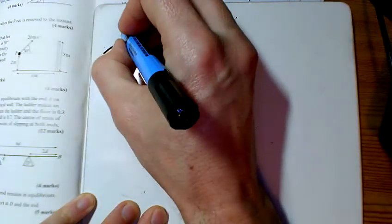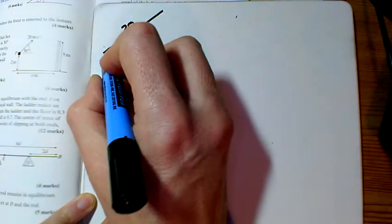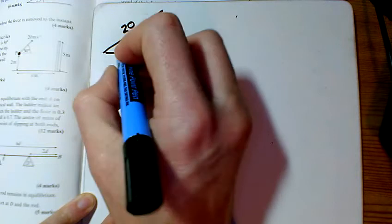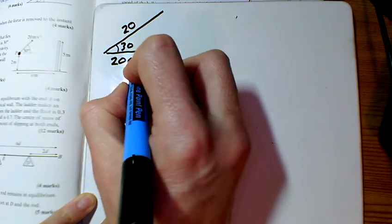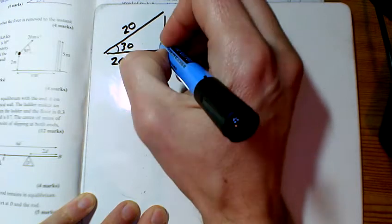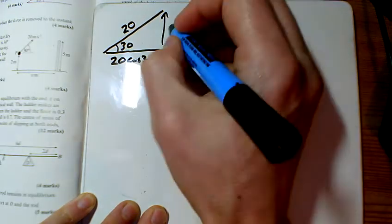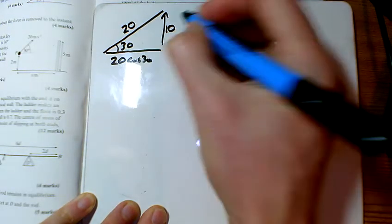We've got another projectiles question here. It's 20 meters per second at an angle of 30 degrees. So horizontally we've got 20 cos 30, and vertically we've got 20 sine 30, which of course we know is 10.